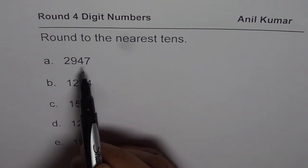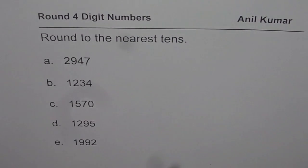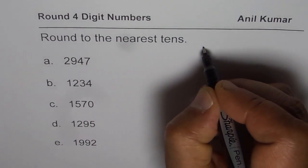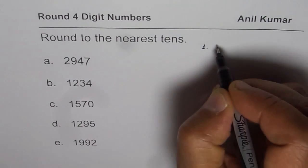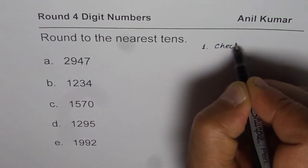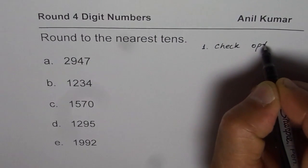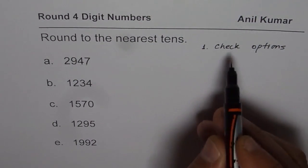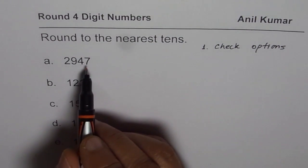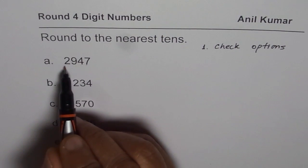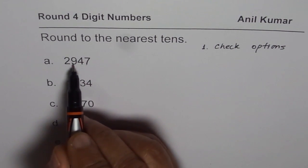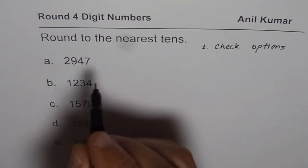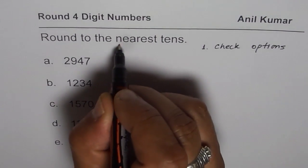That is what we should be getting in ones place. Now, the rule is, first, you should check options. So when you have to round to nearest tens, first thing is we should write down all the possible options. Every time we have two options. The number is 2,947. Nearest tens, nearest tens in this case will be 2,940.